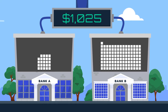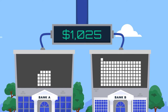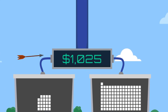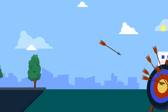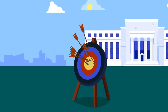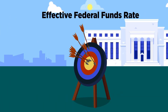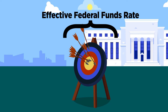On any given day, there are many transactions in the federal funds market and they settle at slightly different federal funds rates. The effective federal funds rate measures the median rate of all these transactions. The FOMC sets the target range for where it wants this effective federal funds rate to be — in other words, a majority of the transactions should fall within the target range.